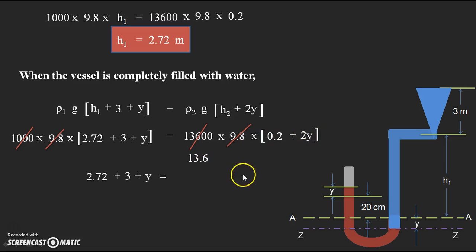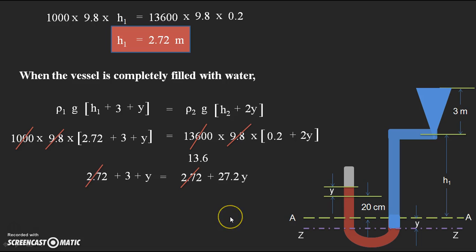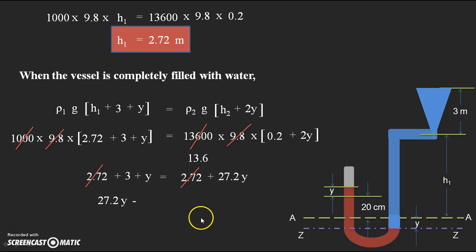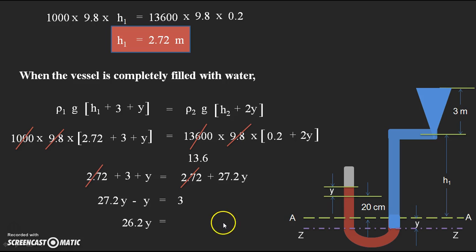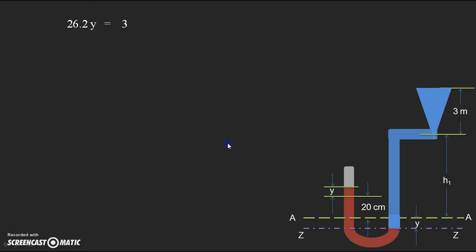Taking all Y terms to one side: 27.2Y − Y = 3, which gives 26.2Y = 3. Therefore Y = 3 / 26.2 = 0.1145 meters. This is the fall and rise of mercury in the right and left limbs respectively when the vessel is completely filled with water.